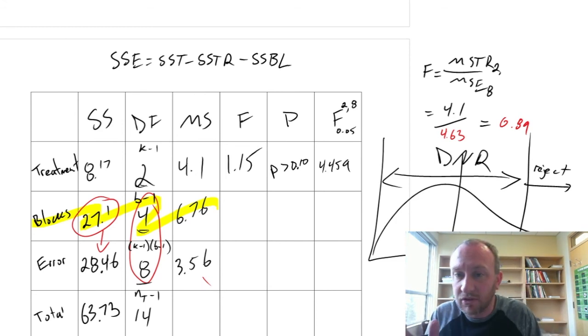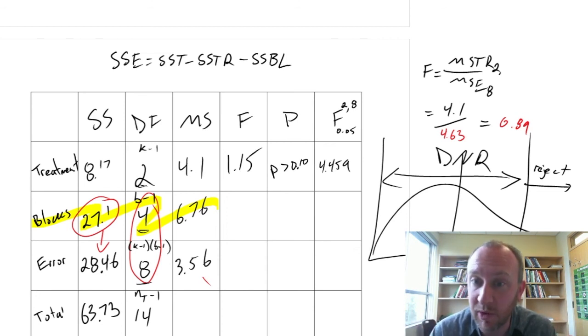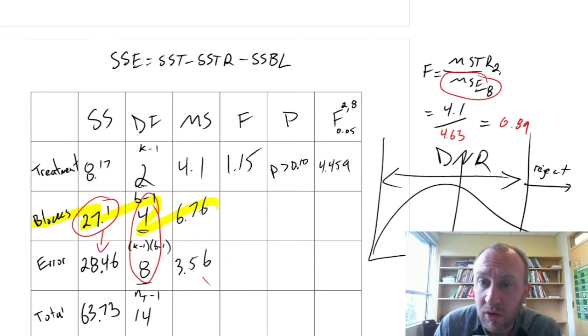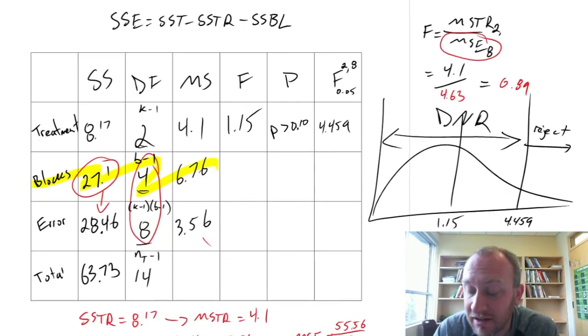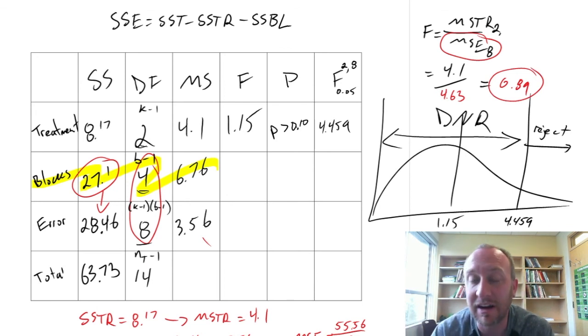But point of the story here is that by taking into account that additional variation due to blocking. We removed it from our estimate of sigma squared. We removed it from our estimate here of MSE. So, that gave us a larger F statistic. Now in this case, we didn't reject. And we don't reject in either scenario. But, if we had not blocked it, here we can see we would have ended up with a smaller F statistic.